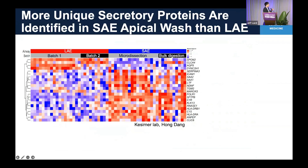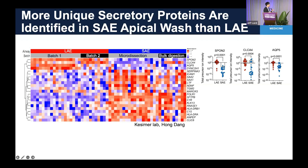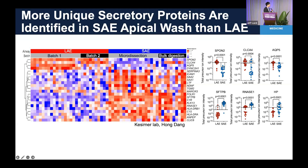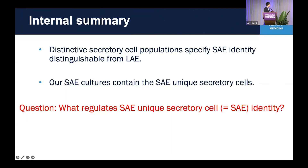That finding is supported by proteomics analysis of apical secretion from large and small airway cell cultures. Some proteins are enriched in large airway cultures, while notably more proteins are significantly enriched in small airway cell culture-derived apical wash. This might support the notion that secretory cells are characteristic of small airway cell cultures — secretory cells produce many secretory proteins, which is why we identify more small airway-specific proteins in the apical wash.